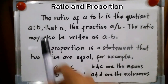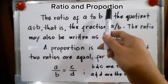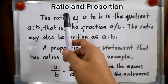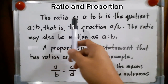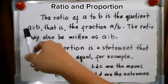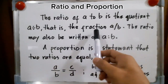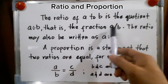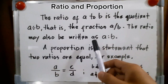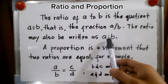Hi, today we'll be discussing ratio and proportion. What is ratio and what is proportion? The ratio of A to B is the quotient A divided by B — that is, the fraction A over B. The ratio may also be written as A is to B.